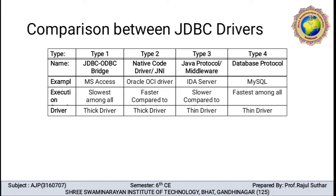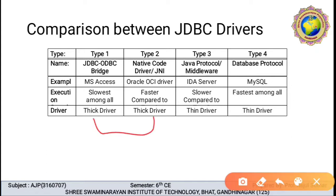What are the examples? Microsoft Access is an example of type 1 driver. Type 2 driver covers the Oracle OCI driver. Type 3 covers the IDS server. Type 4 covers MySQL. Regarding execution speed: type 1 is slowest. Type 2 is faster compared to type 1. Type 3 is slower compared to type 2. Type 4 communication is the fastest among all driver types. Type 1 and type 2 are thick drivers, while type 3 and type 4 are thin drivers.